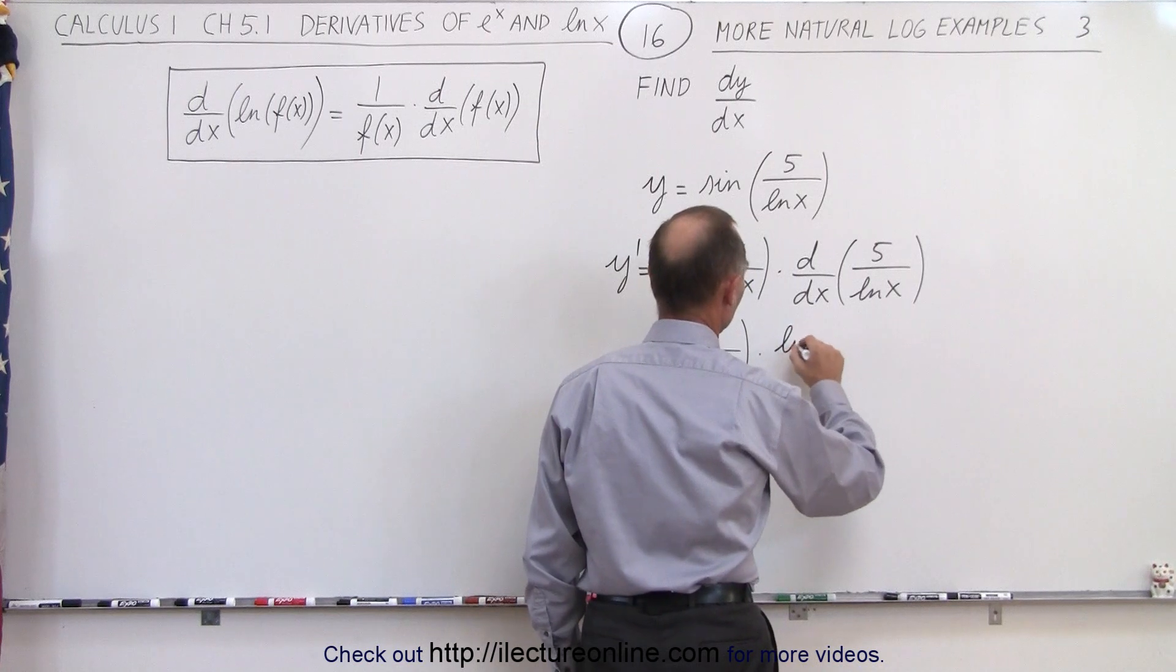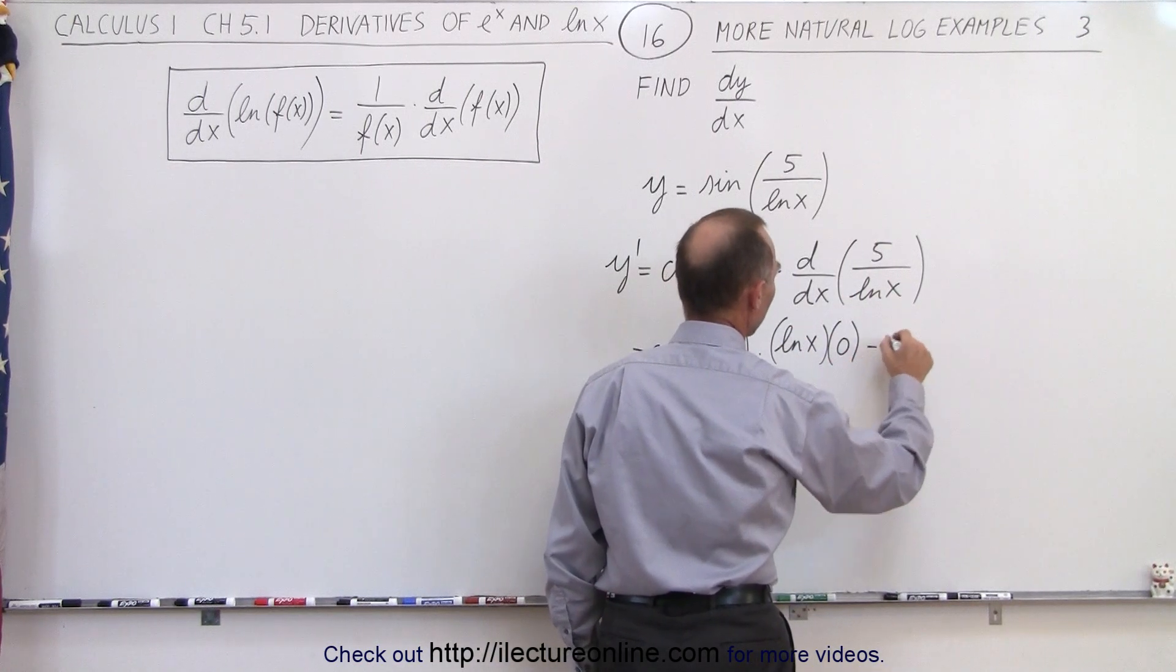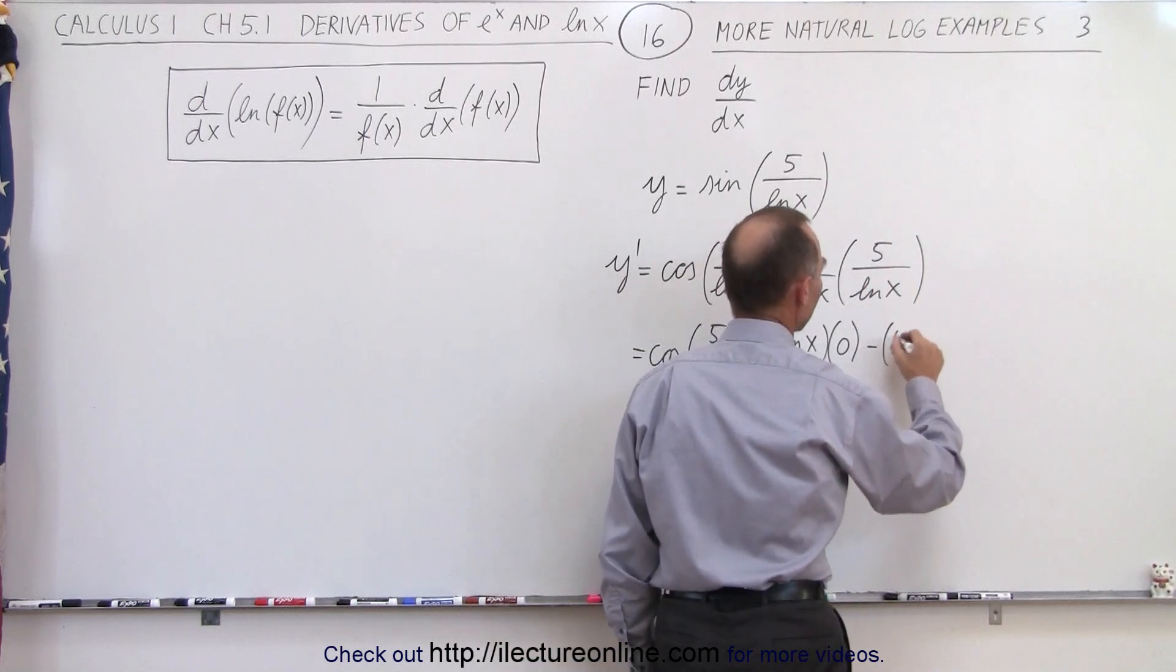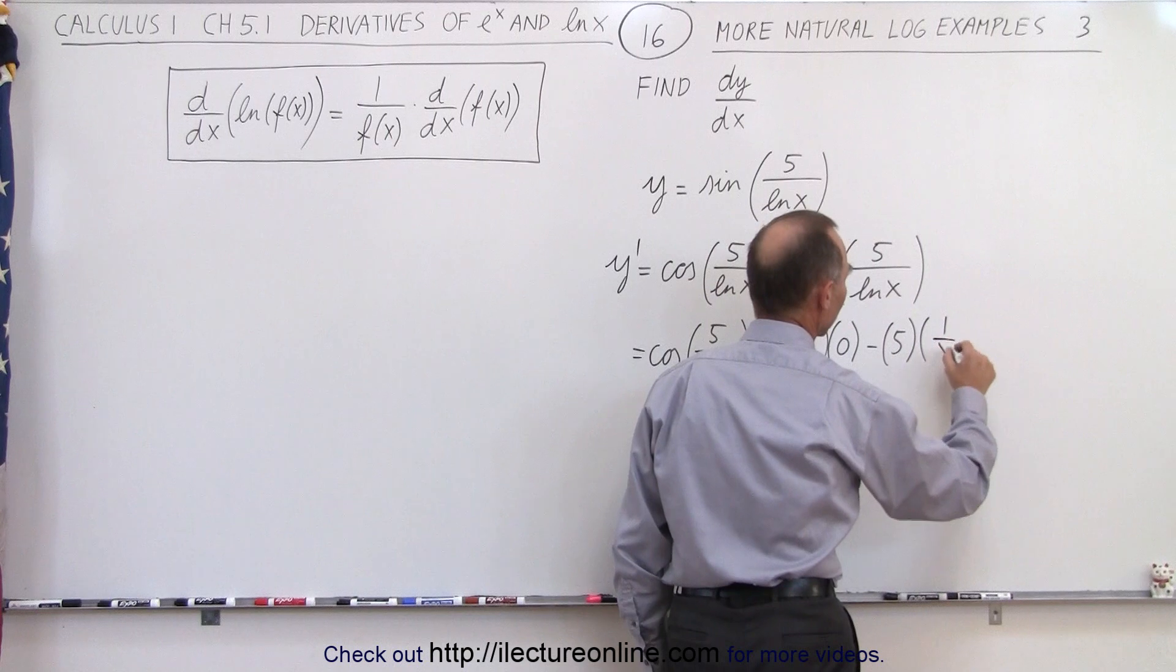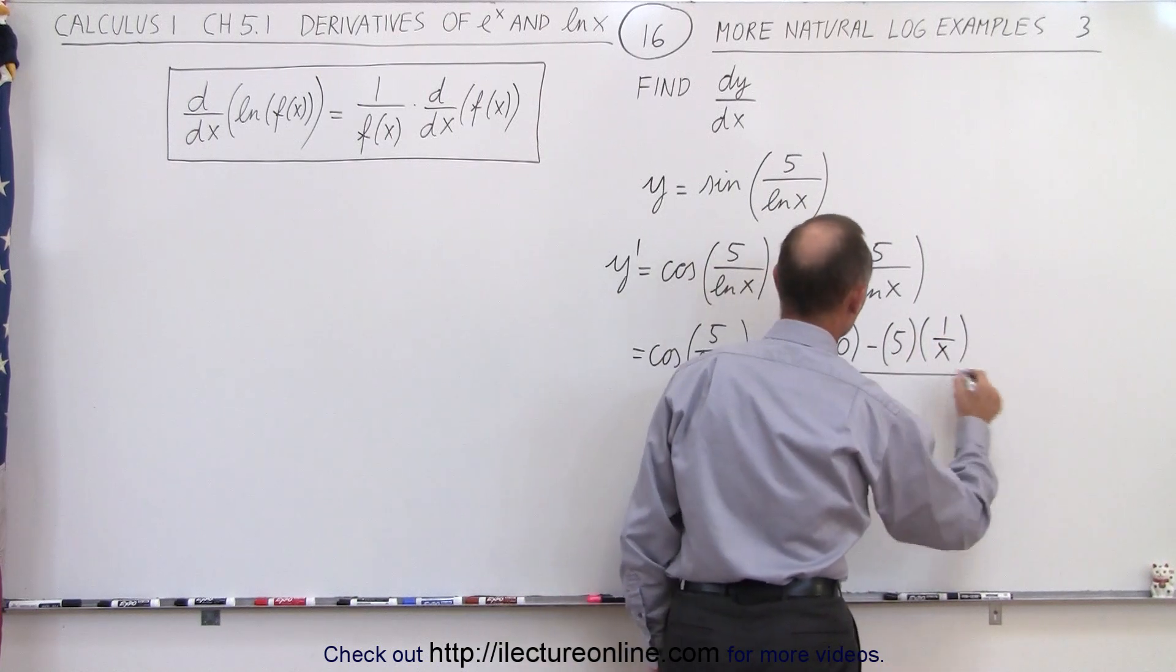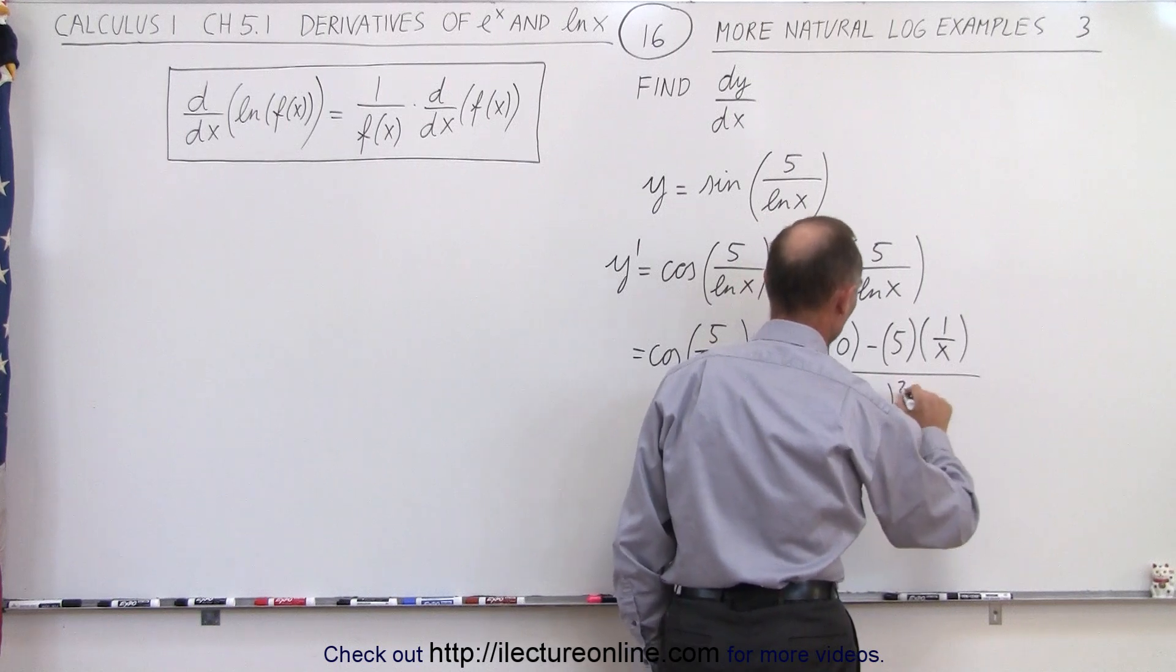We take the denominator, the natural log of x, times the derivative of the numerator, which is 0, minus the numerator, which is 5, times the derivative of the denominator, which is 1 over x, all divided by the denominator squared, which would be the natural log of x quantity squared.